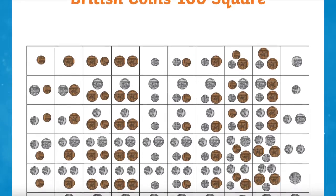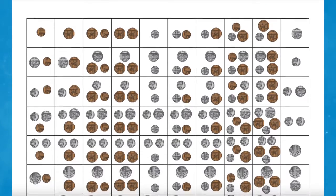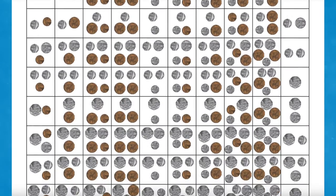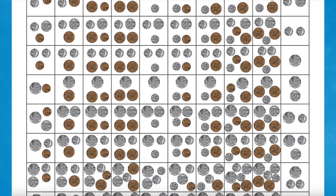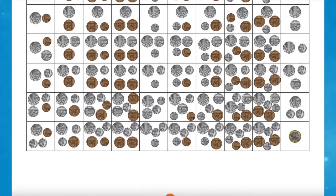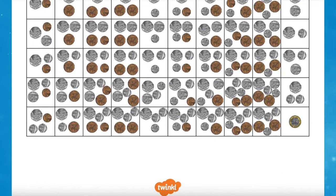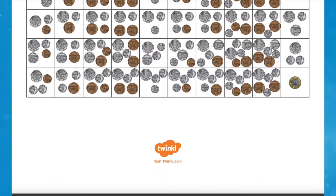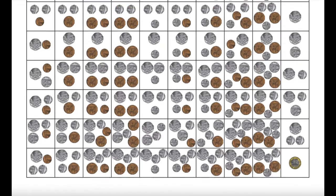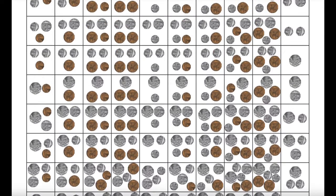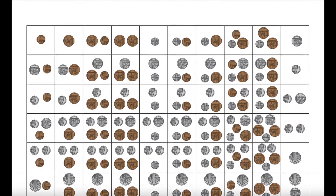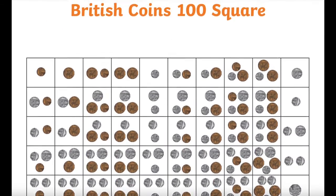Use this unique number square to show children how coins work, how each coin has different values, and how they are combined to make different amounts. Why not print this and stick it in the books for those children who are struggling so that they've always got it to reference.